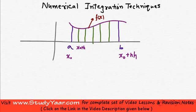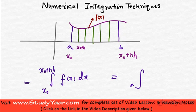So my integration is now from x0 to x0 plus nh, f(x) dx. My integration a to b f(x) dx is now equal to this.